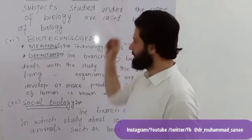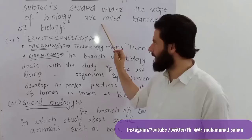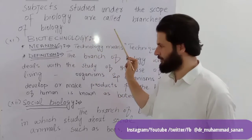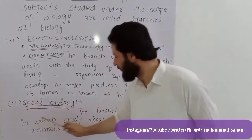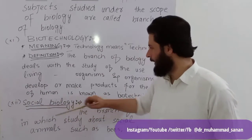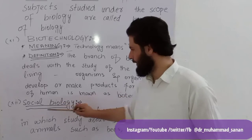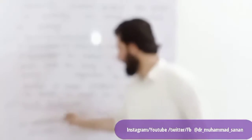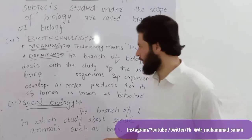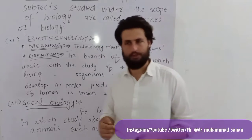If you want to answer a question on this topic in an exam, follow this pattern: first give a headline like 'biotechnology,' then its meaning, then its definition. Similarly for social biology, give a heading, then a meaning headline, then a definition headline. It will look very neat and you can get good marks from the examiners.